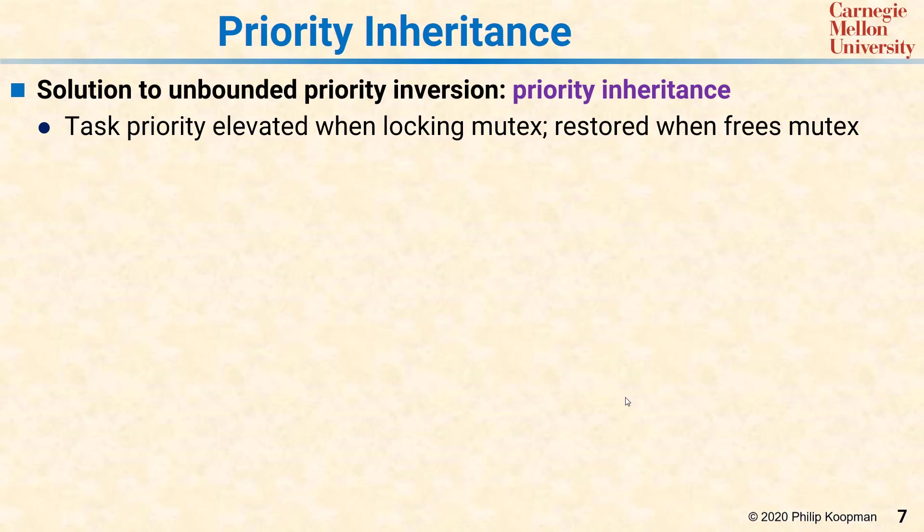Unbounded priority inversion can be solved by using a technique known as priority inheritance. Priority inheritance works by taking the low priority task that had the mutex and elevating its priority while it holds the mutex, and then restoring it back to low priority when it frees the mutex.